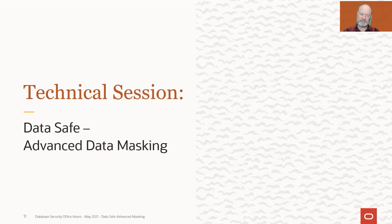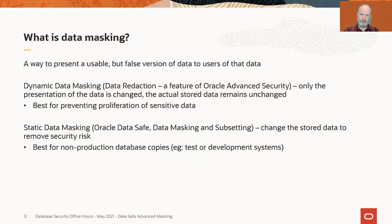Let's start our discussion of data masking with the definition. I looked around to see if there was someone I could quote for a good definition of data masking, and I actually didn't find anyone who had given a good definition. So this is my definition: data masking is a way to present usable data to a user, but the usable data is false — it's not the actual data that was there originally.